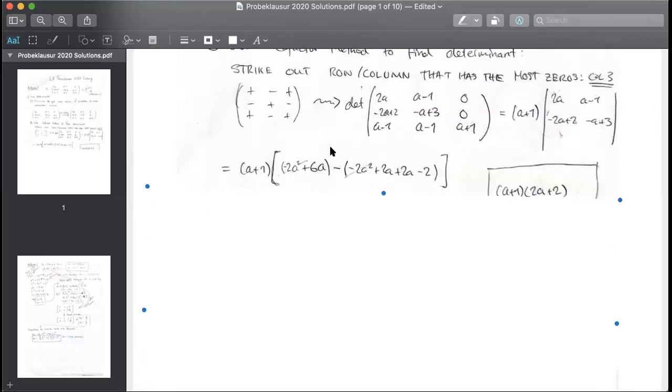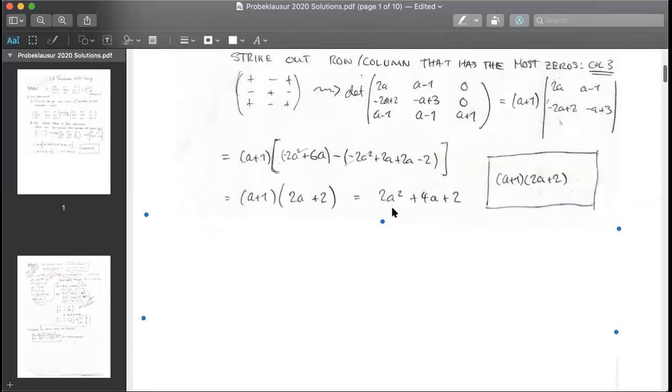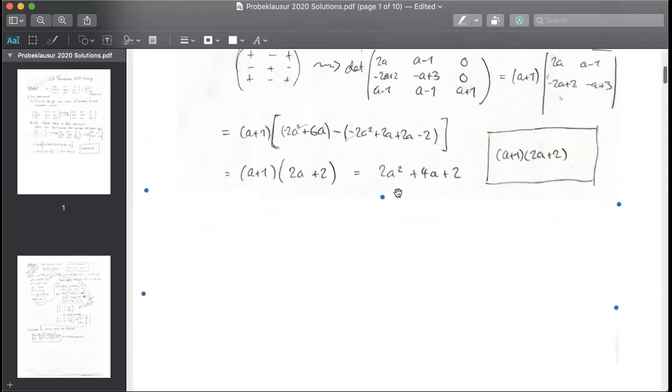And then it's this times that gives you minus 2a squared plus 6a minus the product of these two guys. And that gives you this. And if you simplify it further, you'll see that it factors out nicely and neatly into these two factors. So that's your determinant of the entire matrix.